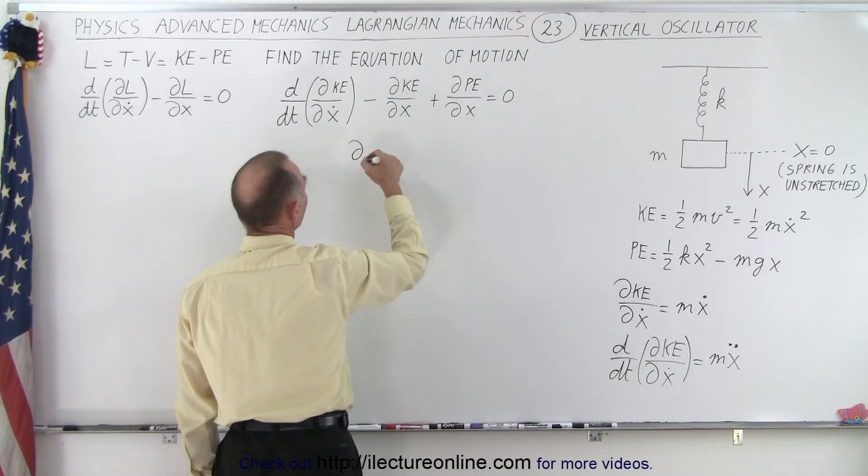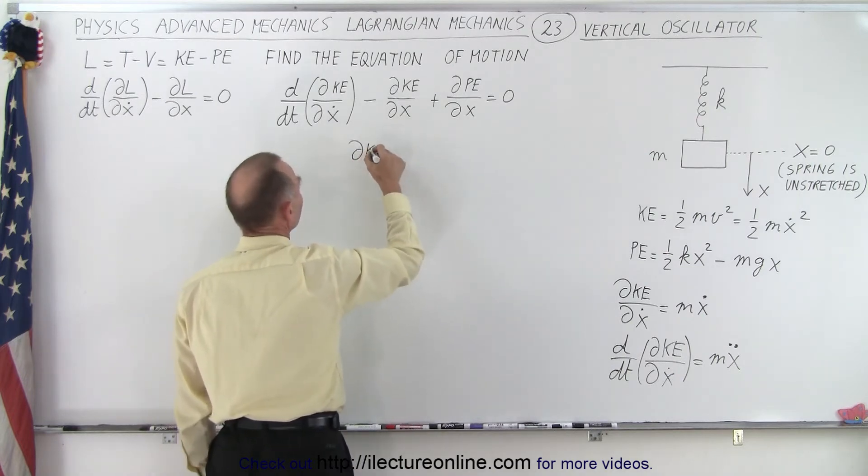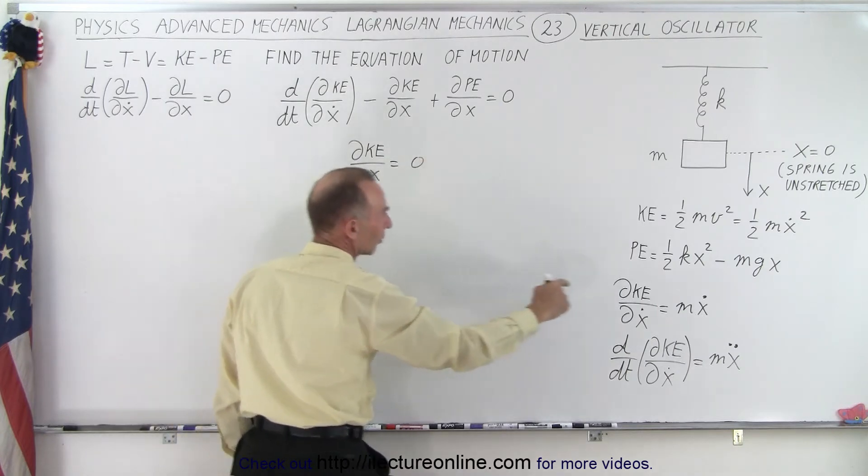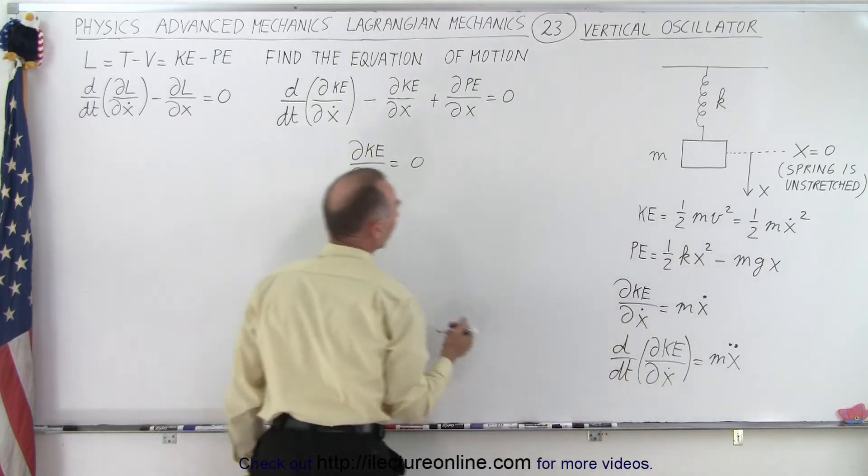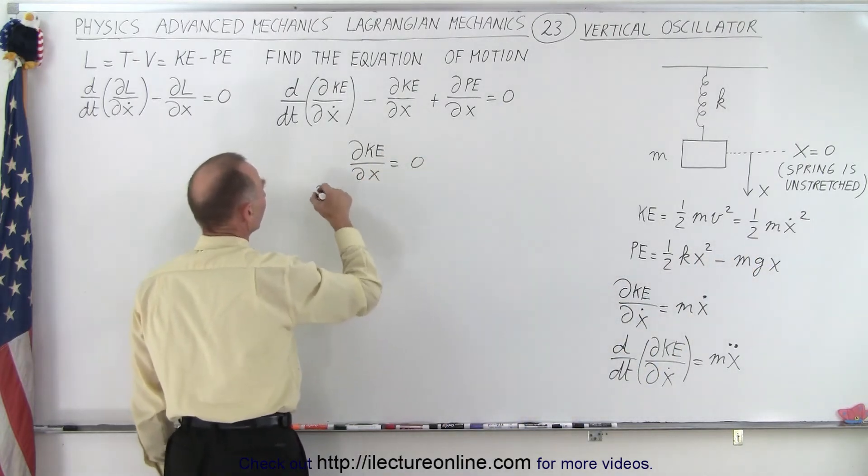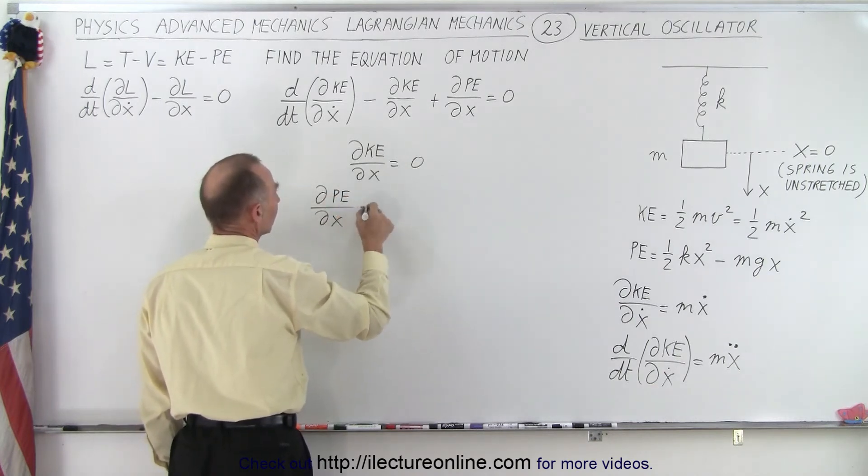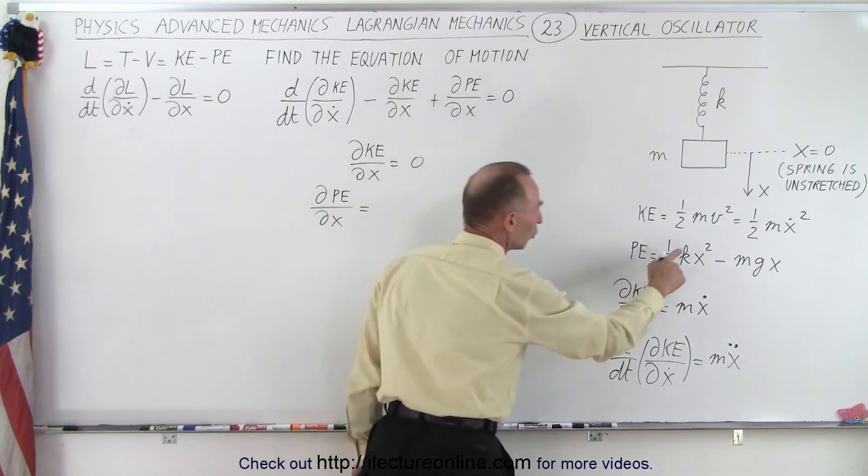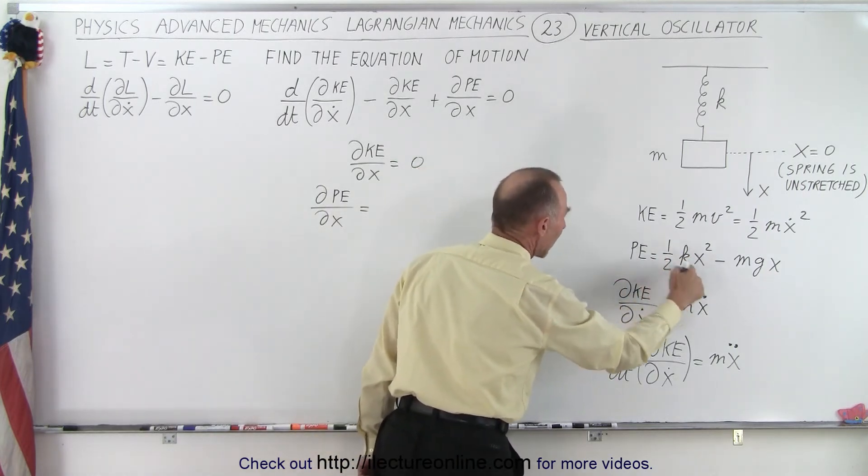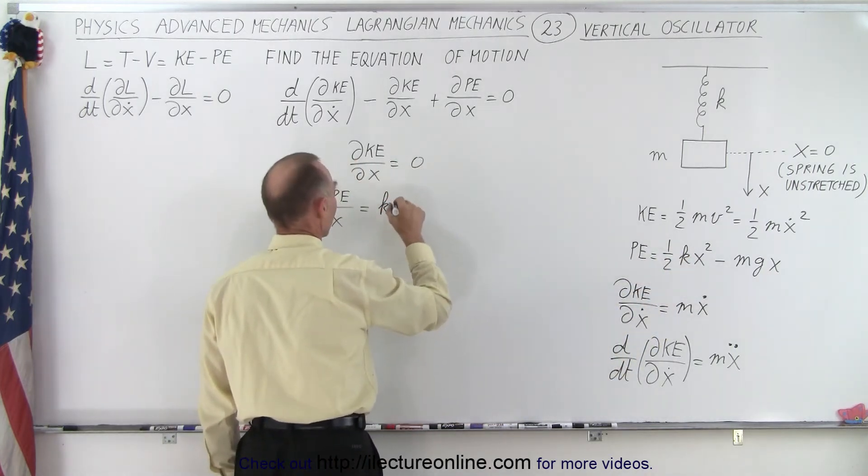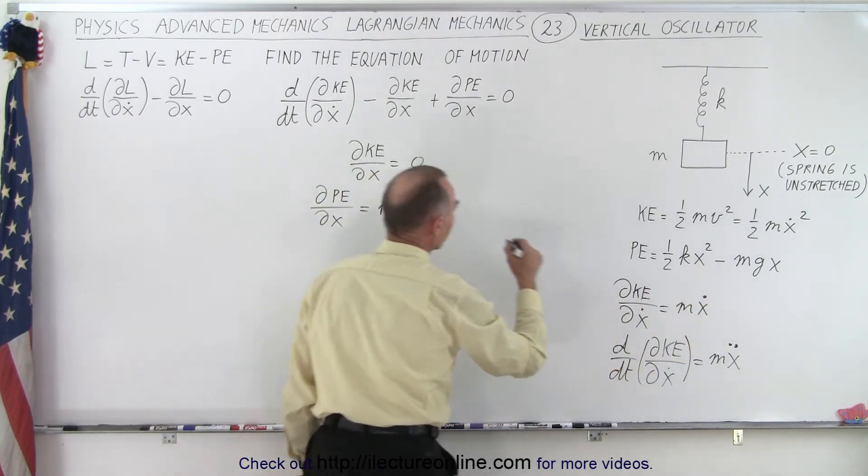So the partial derivative of kinetic energy with respect to x, we know that was equal to zero because there's no x in this expression. And the partial derivative of the potential energy with respect to x is going to be equal to two times one-half, which is one, times kx, and minus mg.